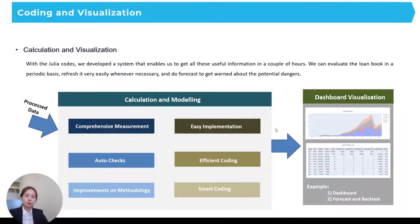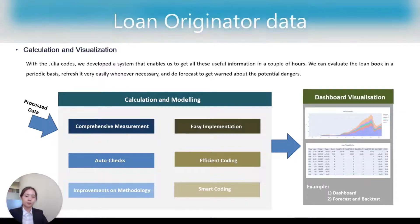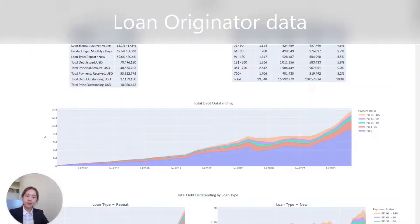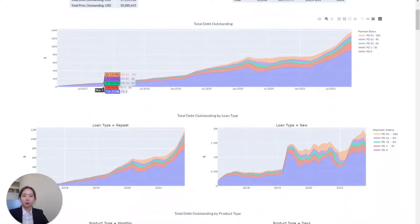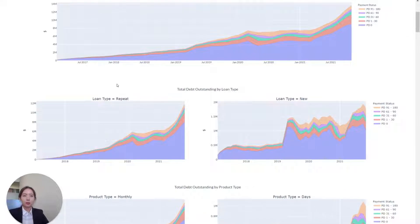The last step is to get the dashboard visualization and I would like to give you some examples. As you can see, these are the summary table and you can get some basic understanding of the portfolio and we analyze the loan book by loan type and the product type.